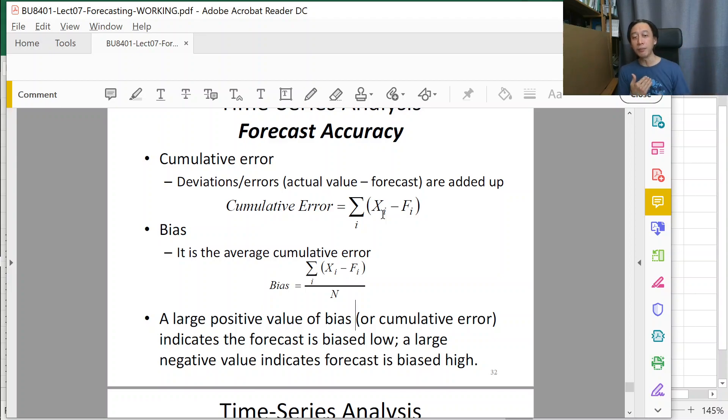If we have negative bias, then basically we are over forecasting. So the data tends to be below our forecast values. And both are not good. It just means that we are changing course. The more we forecast, the worse it gets.